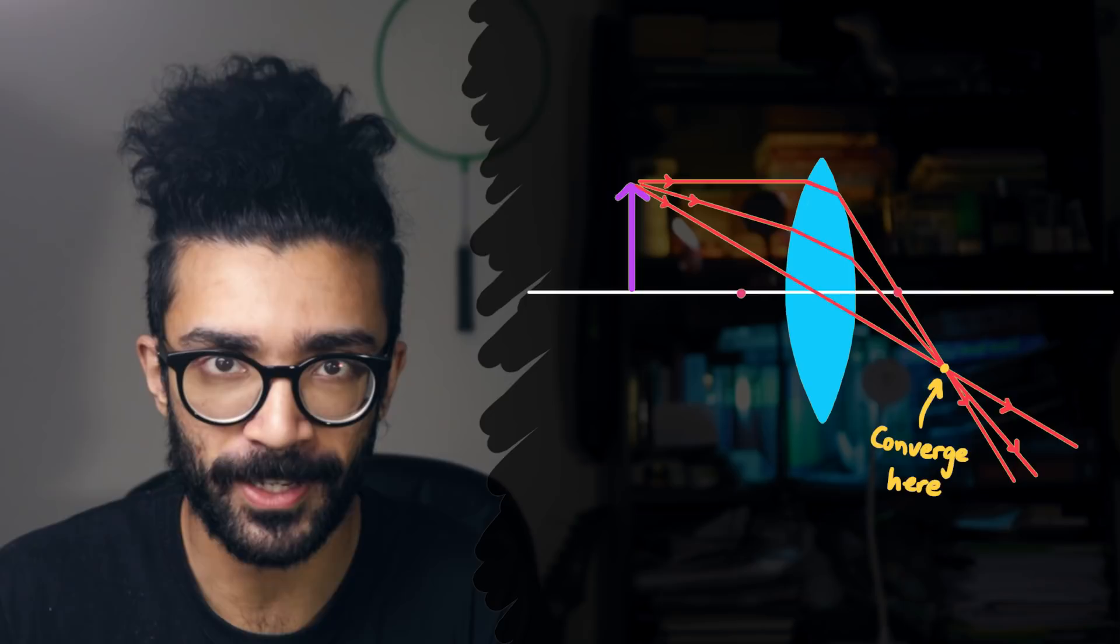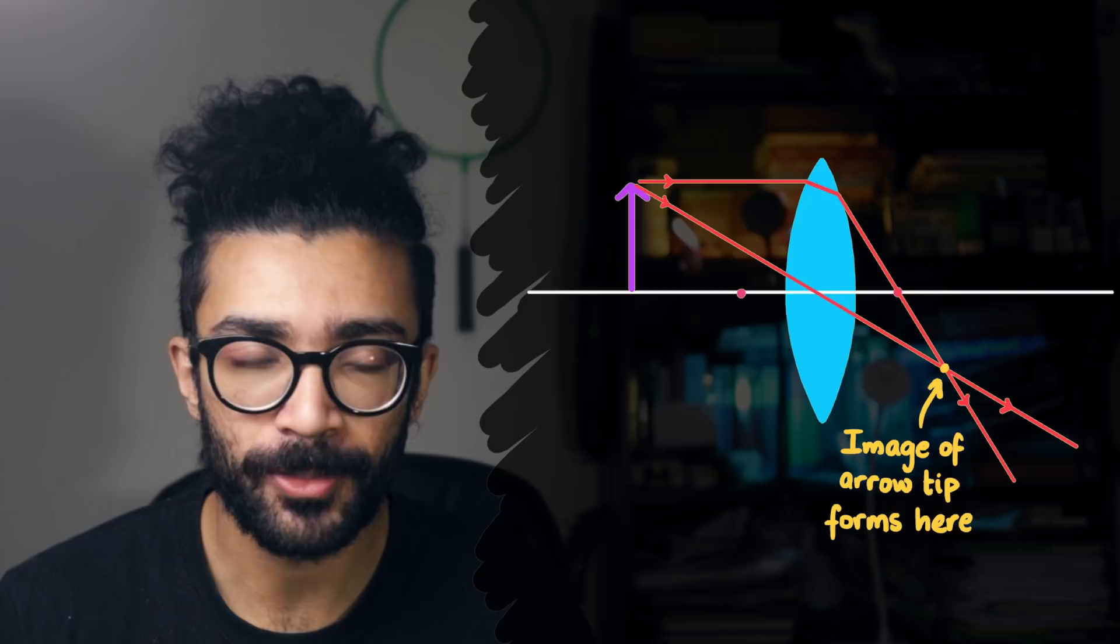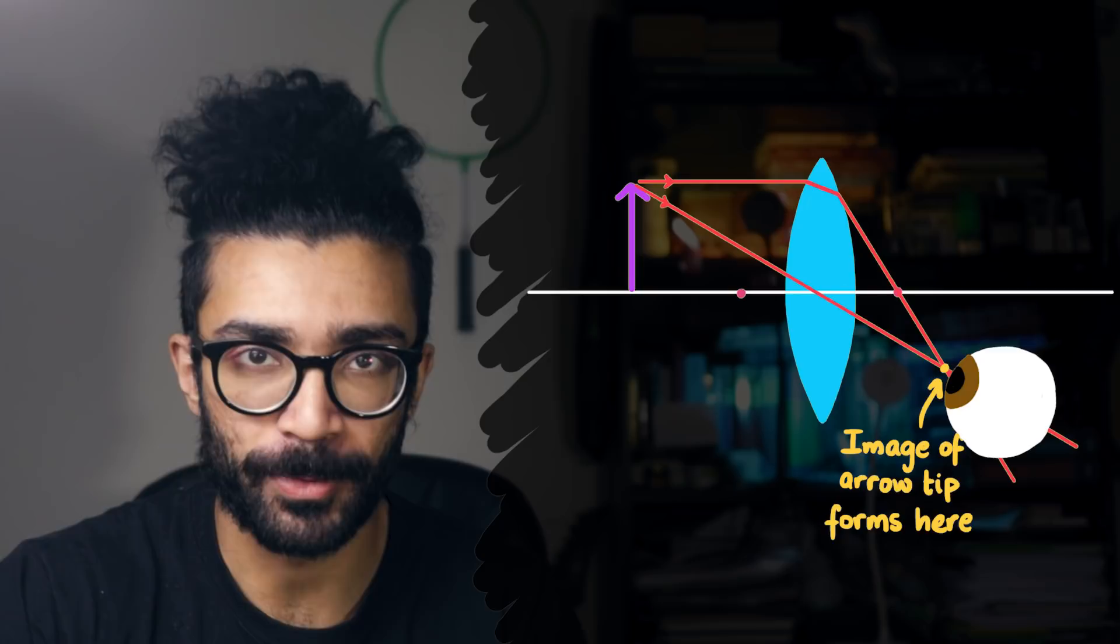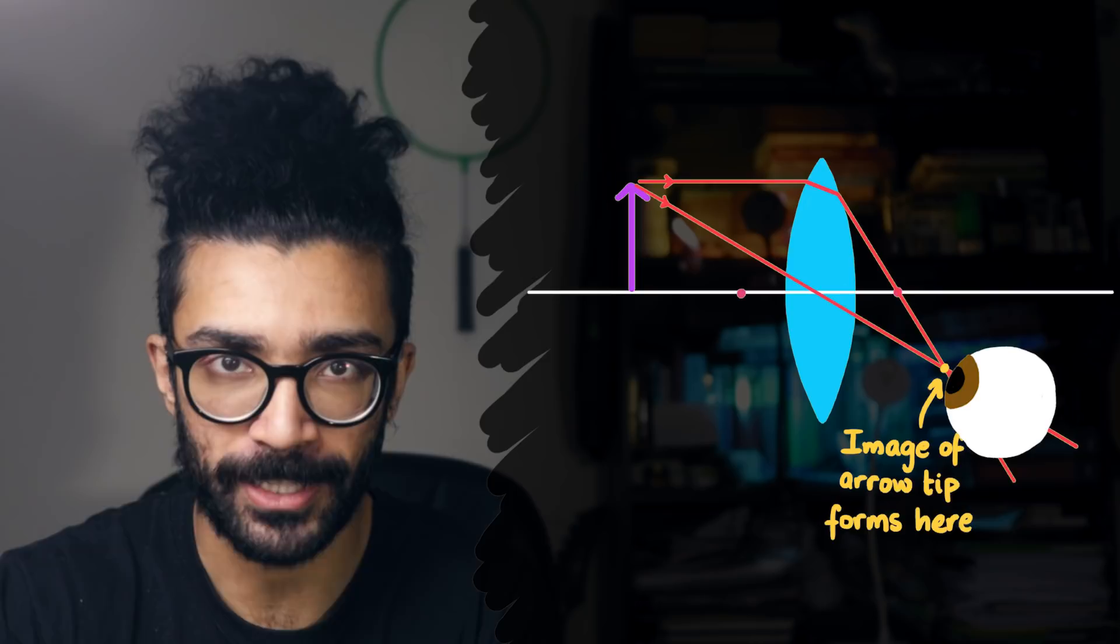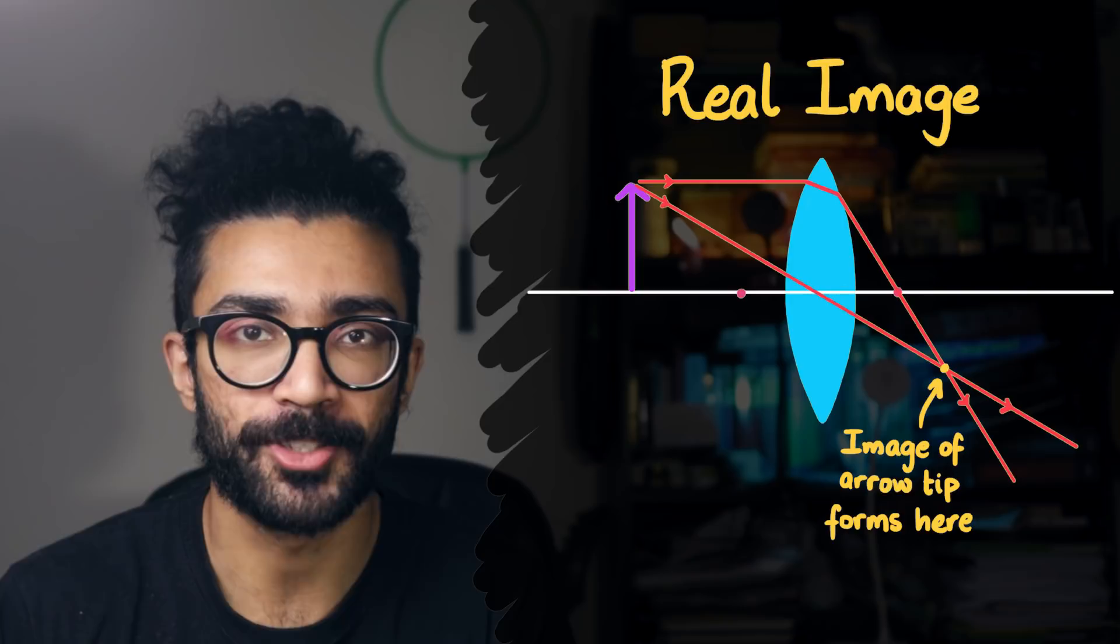Anyway, so what we found is that the image of the tip of the object arrow forms where these rays of light converge. If our observer placed their eye at this position, they would see in clear, sharp focus an image of the tip of the arrow. This is known as a real image because it is formed by the actual convergence of light rays. So light rays are actually meeting at a point and resulting in a focused image.